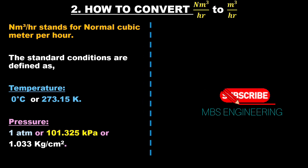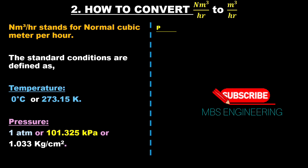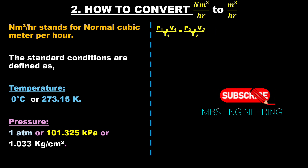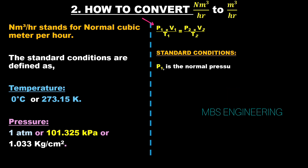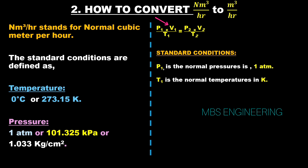The ideal gas law equation is formulated as: P1 × V1 / T1 = P2 × V2 / T2. For the standard conditions: P1 is the normal pressure (1 atmospheric pressure or 101.325 kPa or 1.033 kg/cm²), T1 is the normal temperature in Kelvin, and V1 is the normal volume in Nm³/hr.